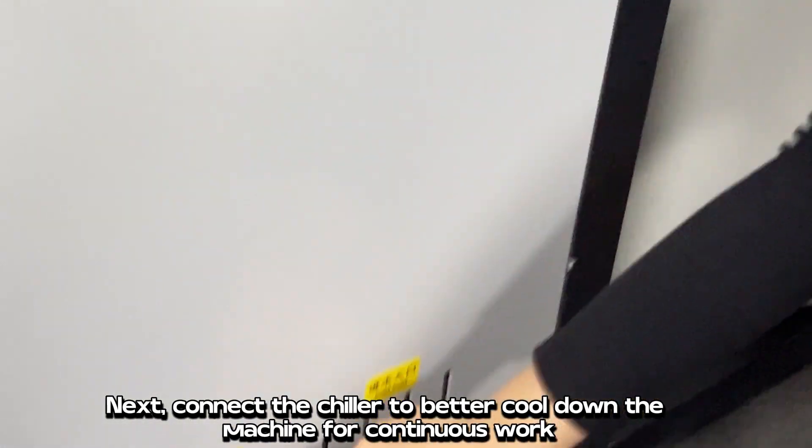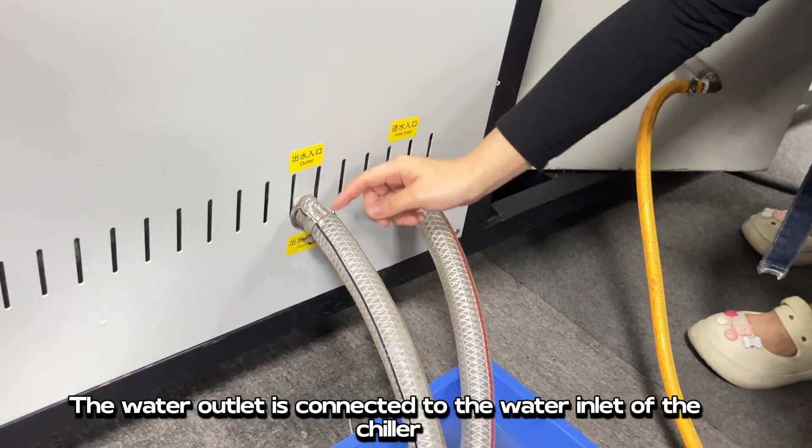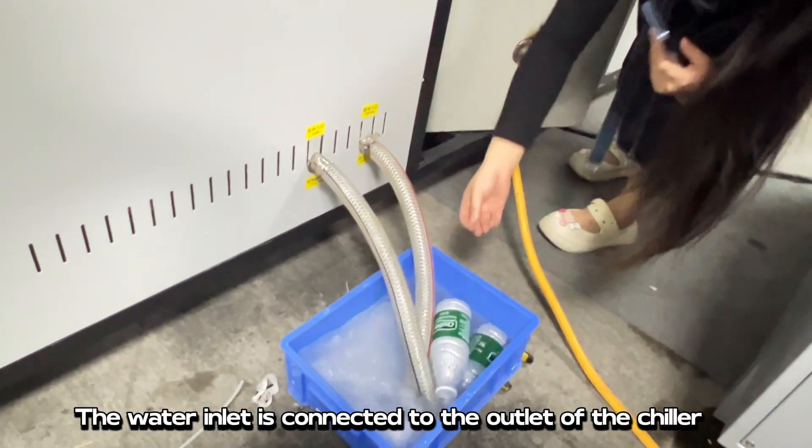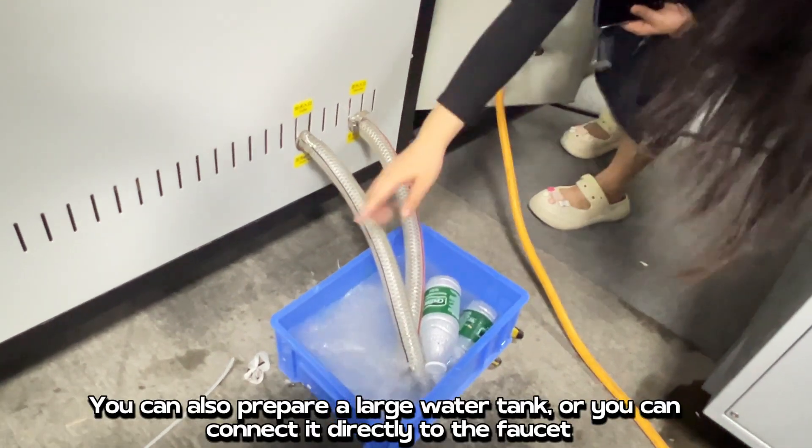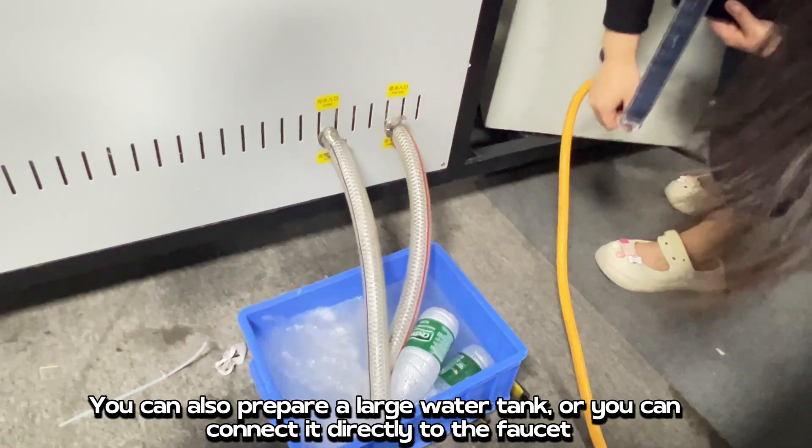Next, connect the chiller to better cool down the machine for continuous work. The water outlet is connected to the water inlet of the chiller. The water inlet is connected to the outlet of the chiller. You can also prepare a large water tank, or you can connect it directly to the faucet.